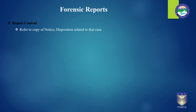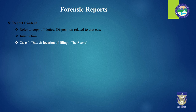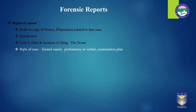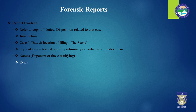From a content perspective, the report should refer to the copy of the notice, the disposition related to that particular case, and the jurisdiction. Different jurisdictions, different courts — specifically in the US — have different rules. For example, a district court in Washington and a district court in Texas might have different jurisdictional rules for the same thing. You need to include the case ID, the date and location of that filing, and what the scene is about. You also need to include the style of the case — a formal report — which is basically the format used for official court documents, for example using a header like plaintiff versus defendant.